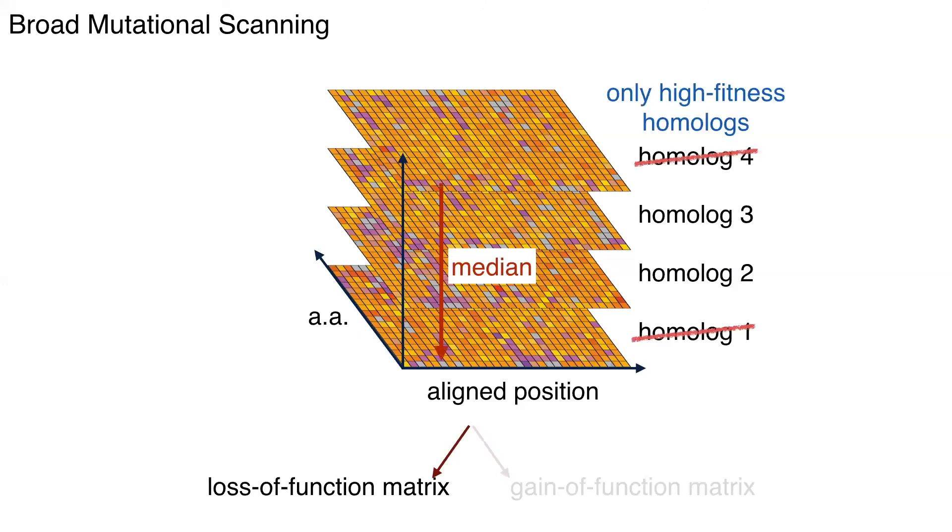So we were able to split this into two, the first being a loss of function matrix. So we looked at the sequences which complemented and which had mutations which primarily caused loss of function. And for those, we took only high-fitness home logs, and we collapsed along the home log dimension.